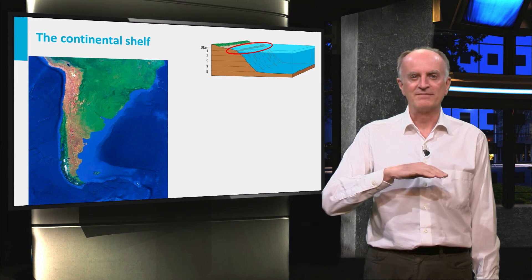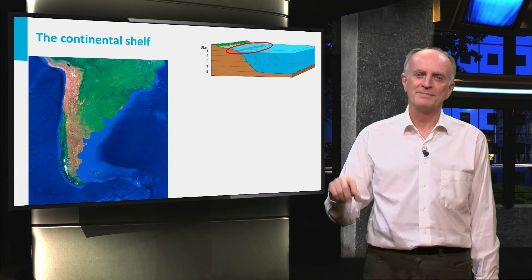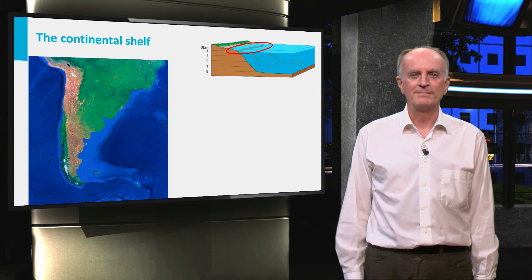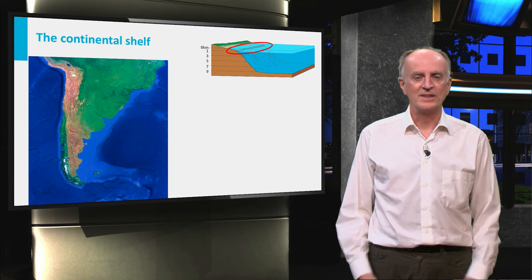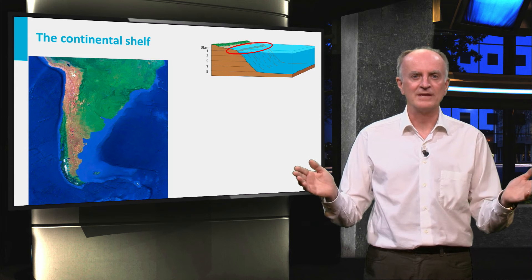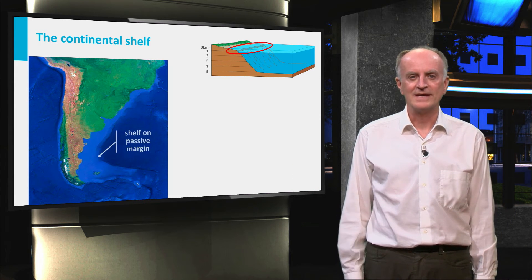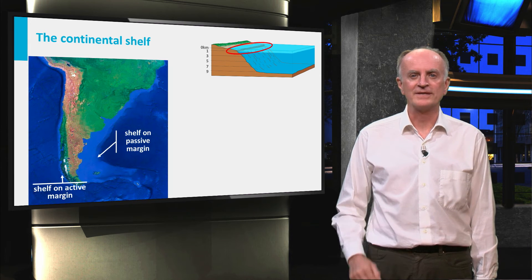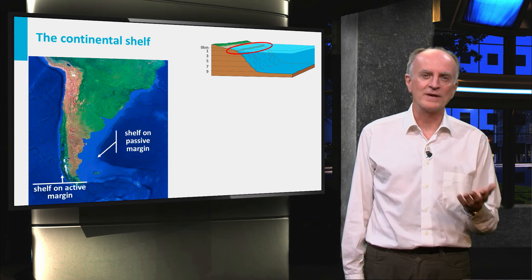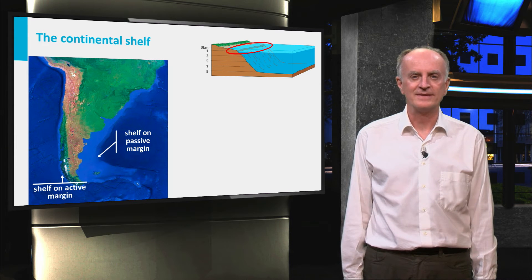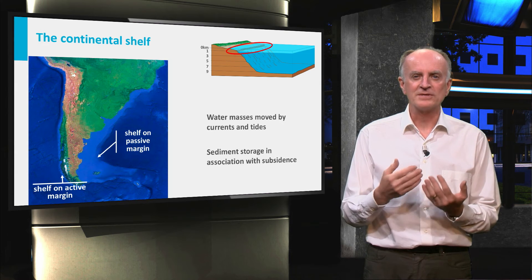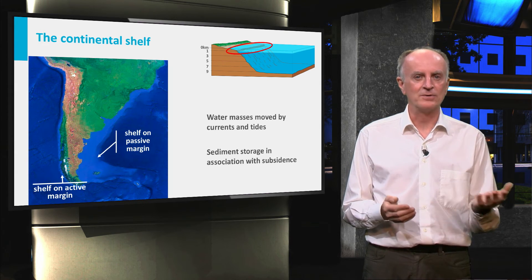The continental shelf is a flat domain adjacent to the coast, characterized by water depths below 150 to 200 meters. A well-defined shelf edge marks the transition with the continental slope. The width of the shelf changes from region to region and can vary from kilometers to several tens of kilometers or even hundreds of kilometers. In general, shelves associated with passive continental margins, such as the eastern side of the American continent, are much wider than those developed along active margins, such as along the Andes. Continental shelves are the domains of currents and tides and the fundamental temporary storage place of sediments between the coast and the abyssal plain.